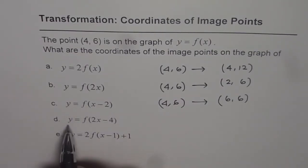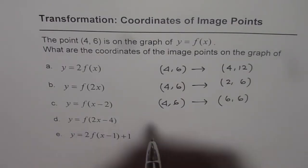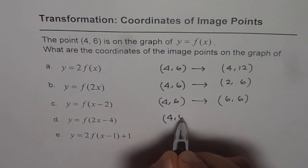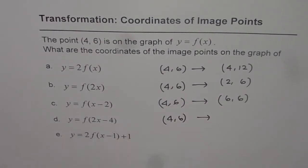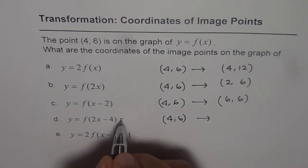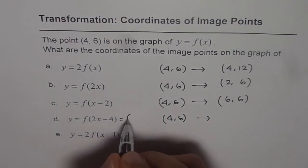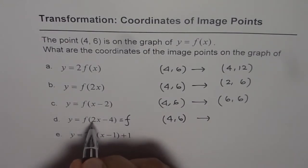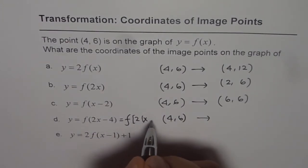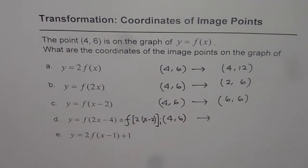The next one is y = f(2x-4). How will the point (4, 6) get transformed in this case? Here it's important to rewrite this in factored form. Let's factor out two. If you factor out two, you get x minus two. So y = f(2(x-2)). That is how you should do it.